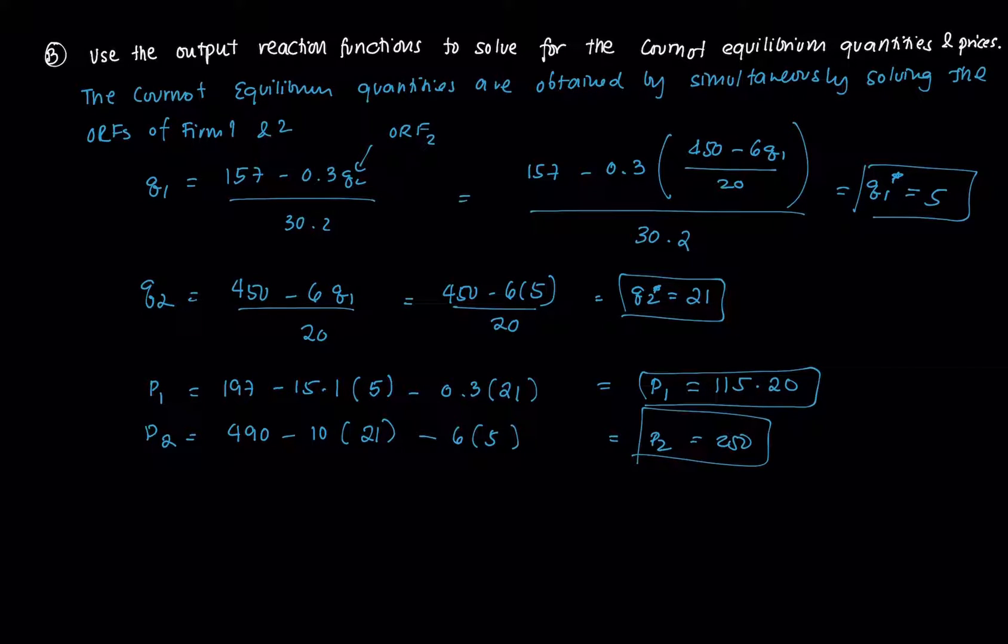That's our discussion on the Cournot model with differentiated products. Very similar to the Cournot model with non-differentiated products. The main difference is we have two different demand functions, which leads us to have two different quantities and two different prices. That's it for this video. I'll see you in the next video, and thank you very much for your attention.